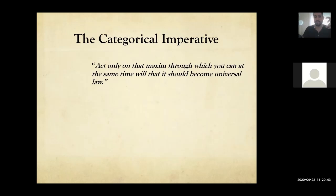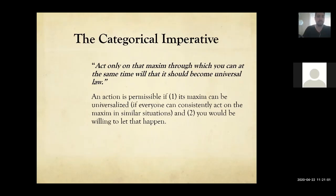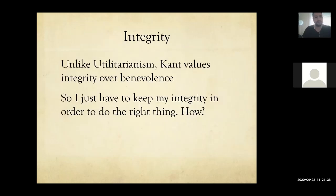The categorical imperative is perhaps the main point of this entire moral theory. He says: act only on that maxim through which you at the same time will that it should become universal law. So an action is permissible if its maxim can be universalized — meaning everyone can consistently act on the maxim in a similar situation. What he means by being willing to let it happen is not an opinion; it means it has to be logical. And remember, it's not about the consequences of the action.